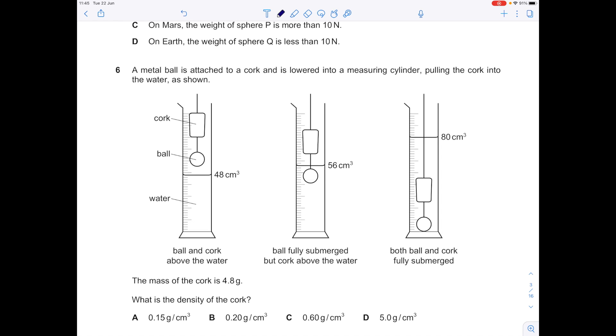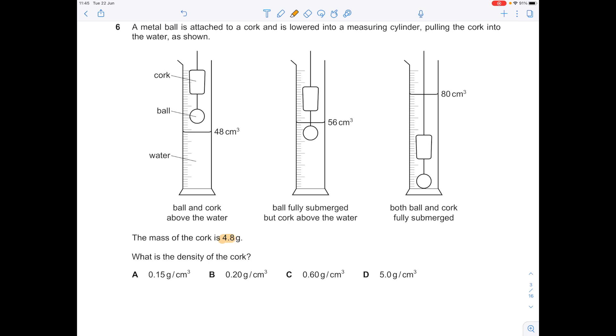A metal ball is attached to a cork and is lowered into a measuring cylinder, pulling the cork into the water as shown. The mass of the cork is 4.8 grams. What is the density of the cork? Use this formula triangle: density is mass over volume. Our mass is nice and straightforward, it's 4.8 grams. Be careful now with your volume. You're after just the volume change as a result of the cork entering that water. This is your metal ball, here's your cork. Really you're looking at the volume difference which is just brought about by the cork itself. You're comparing this volume here with this one here because it's only that cork being lowered that causes the change in volume. So it's actually going to be 80 minus 56 which is 24. So that's the volume you use to get a value of 0.2, which is B.